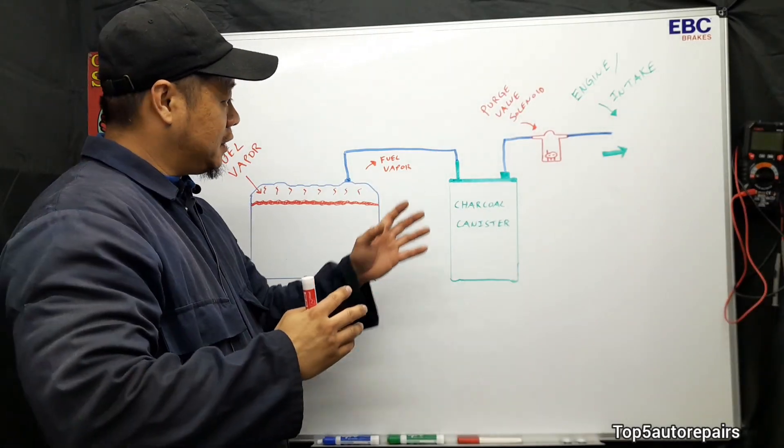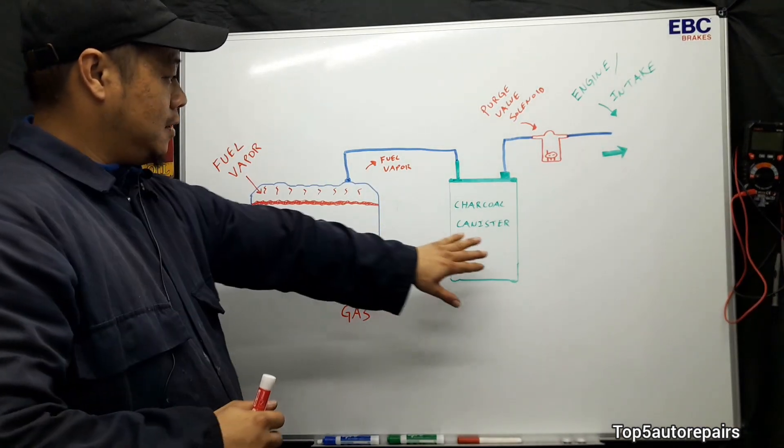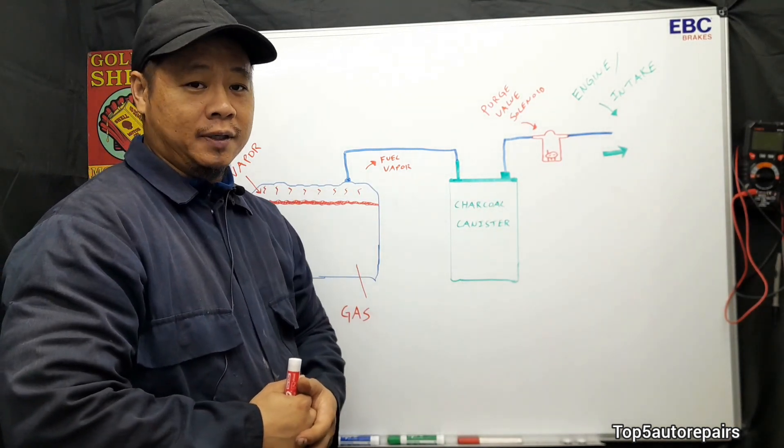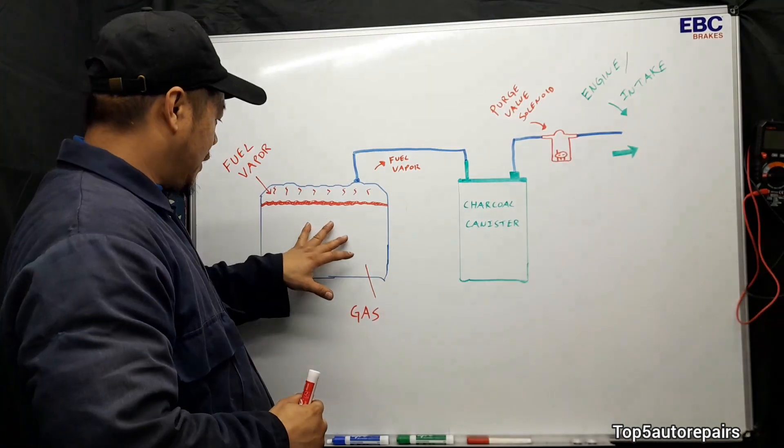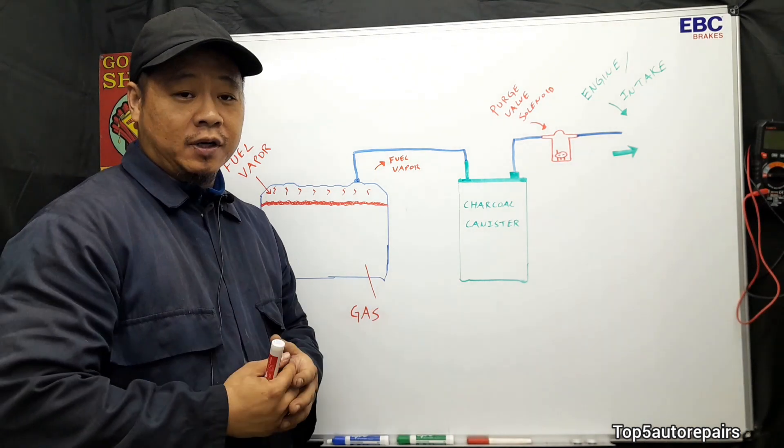So what I have here is the drawing of the EVAP system. Basically you have the fuel tank, you have the charcoal canister, and you have the purge valve solenoid. In the EVAP system it should always be a sealed system and the fuel tank should also be sealed as well.